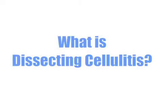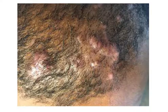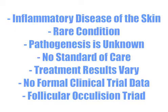So what is Dissecting Cellulitis, and why is it so confusing and hard to diagnose? Dissecting Cellulitis is a rare inflammatory disease of the skin where the origins of the condition are not well understood, there is no standard of care, treatment results vary, there is no formal clinical trial data, and it is part of the follicular occlusion triad.